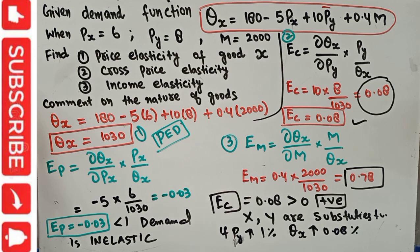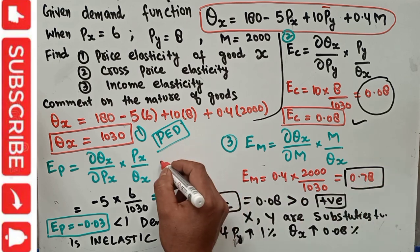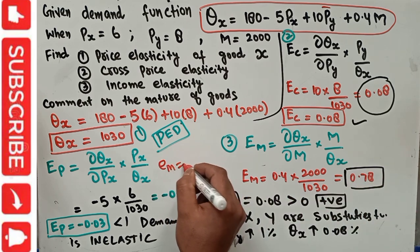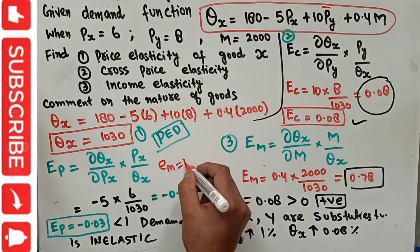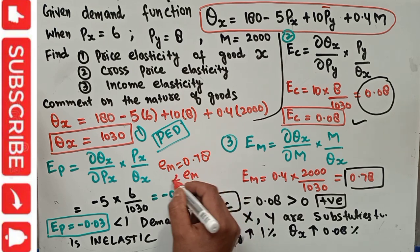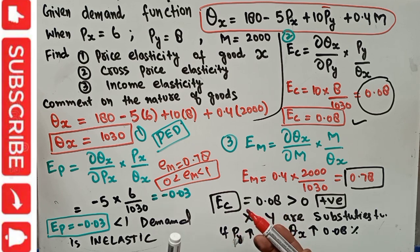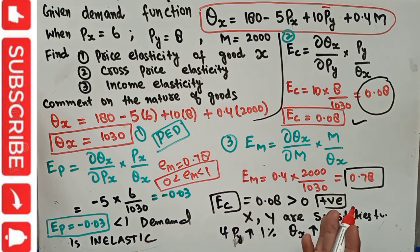Finally, income elasticity is 0.78, which lies between 0 and 1. When income elasticity lies between 0 and 1, we say the good is normal and income inelastic, meaning the good is a necessity, not a luxury. I hope I made myself clear in this video. Thank you.